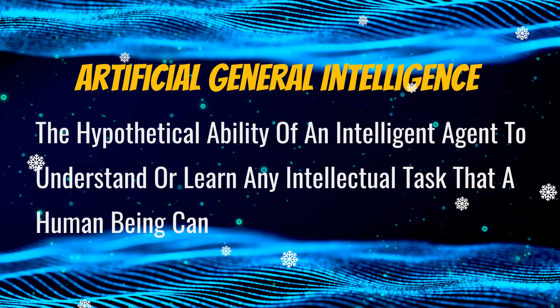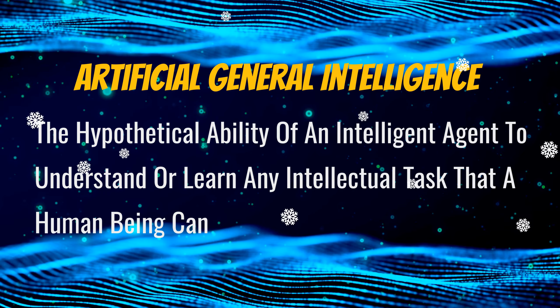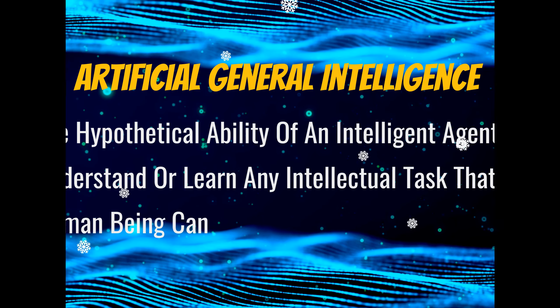Artificial general intelligence is the hypothetical ability of an intelligent agent to understand or learn any intellectual task that a human being can. Now, how do we build such an intelligent agent? We need to meet the following three conditions to build an AGI.